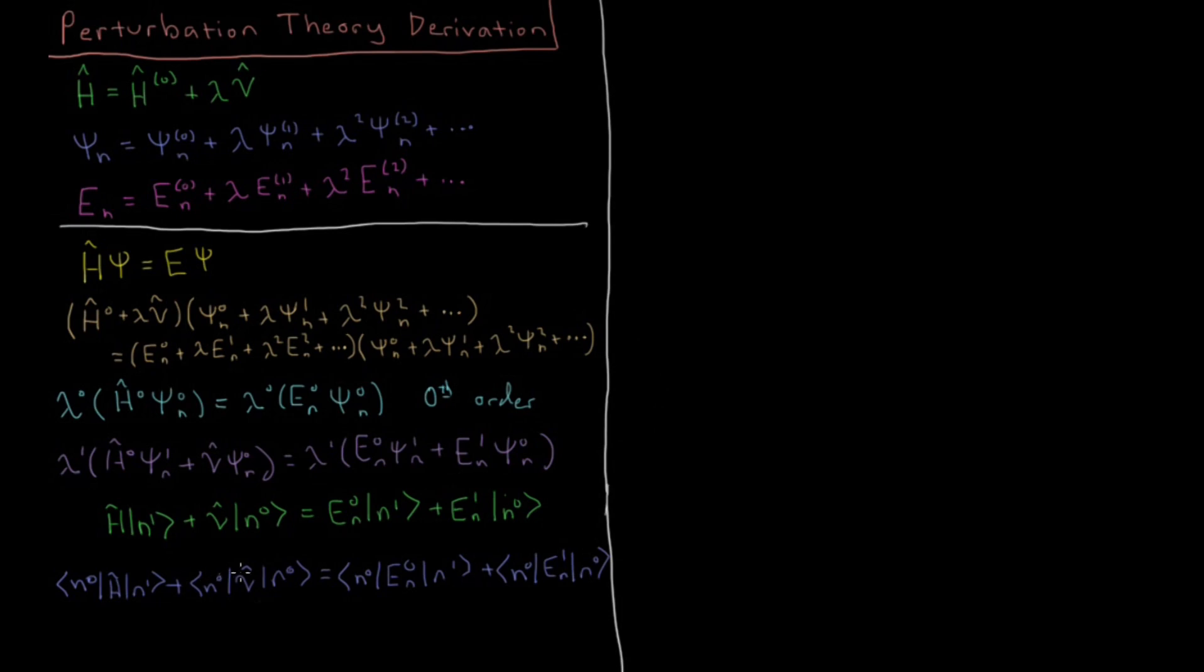What simplifications can we make from here? Well, these two on the right side here, these are just constants. We can pull constants out in front of those integrals. So this is just going to give us E1n times n0, n0. And we know that this wave function is normalized. So this n0, n0, or integral of n star n is just going to be 1. So this term is just going to become E1n.